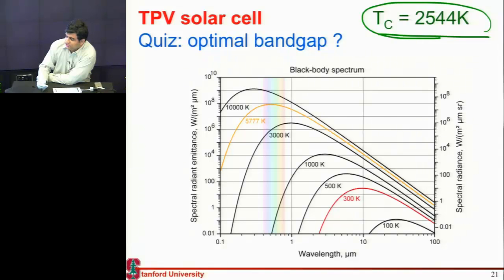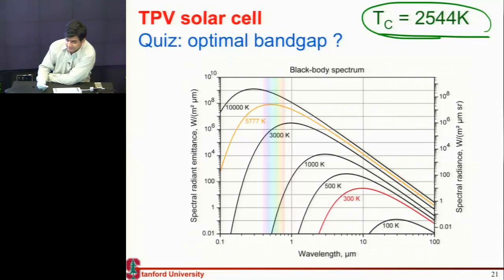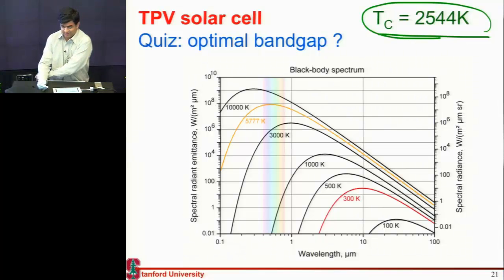Should it just be a silicon cell, or should it be some other material? A direct band gap material — okay, that's fine. But what should be the band gap?